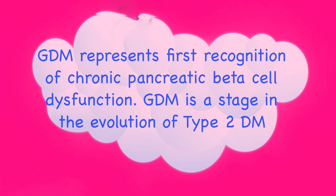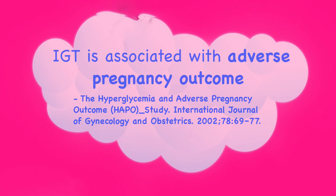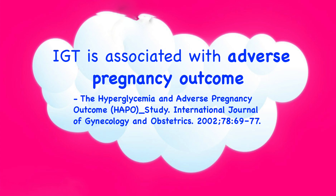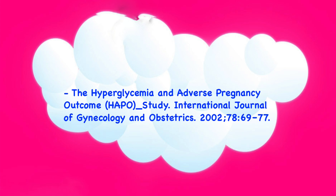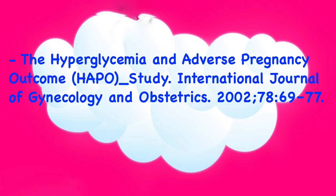Remember, gestational diabetes mellitus represents the first recognition of chronic pancreatic beta cell dysfunction. GDM is a stage in the evolution of type 2 diabetes mellitus. Impaired glucose tolerance is associated with adverse pregnancy outcome, and this has been conclusively proved by the HAPO studies.